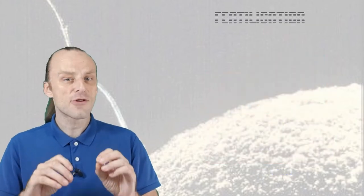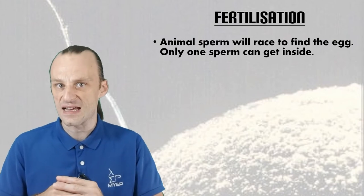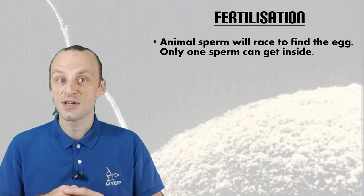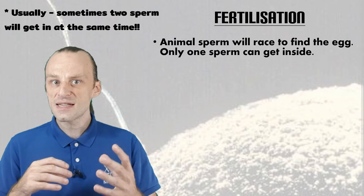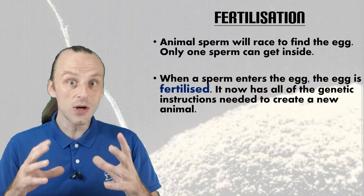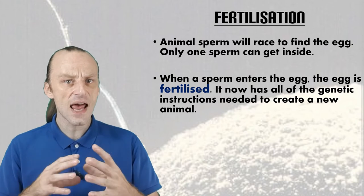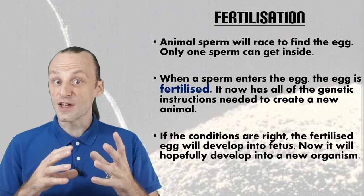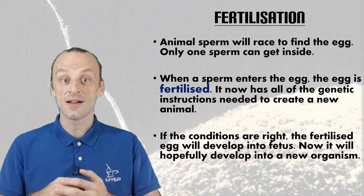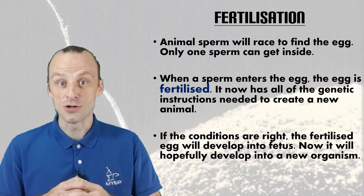All of the male sperm are in a race to find the egg, and once they do, only one sperm is able to get inside. After it does, the egg will change so that no others are able to get in. Once fertilized, the egg has all of the genetic information it needs to become a new organism — this is the first cell of a new creature. If the conditions are right, the fertilized egg will start to divide into more cells, and eventually it will become a fetus and hopefully develop into a brand new creature.